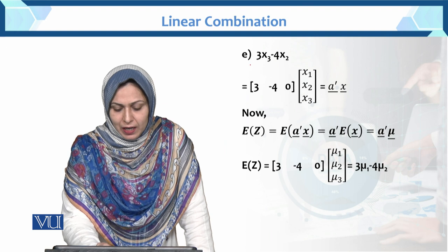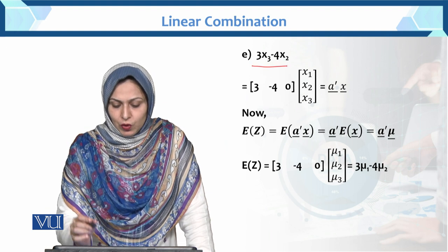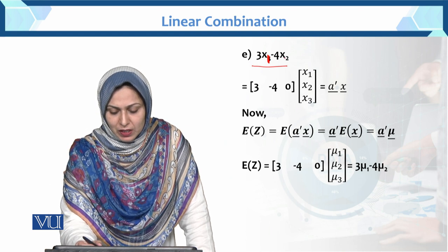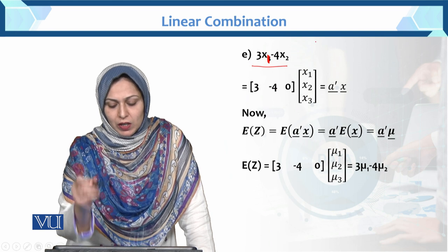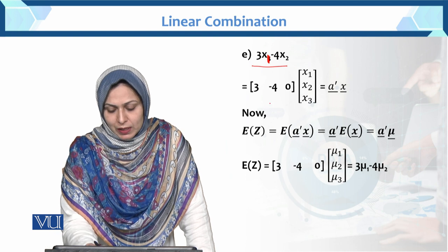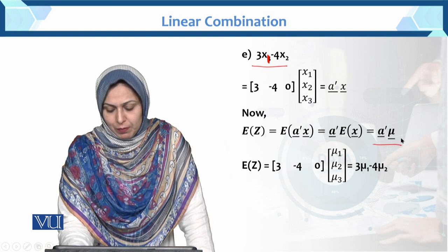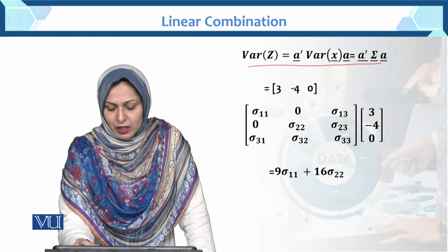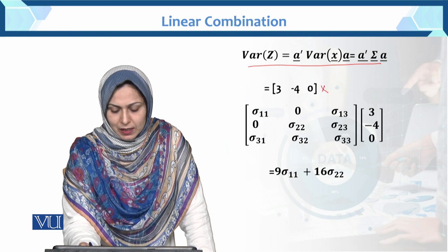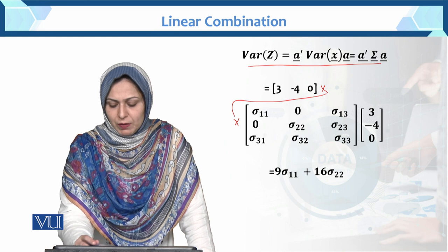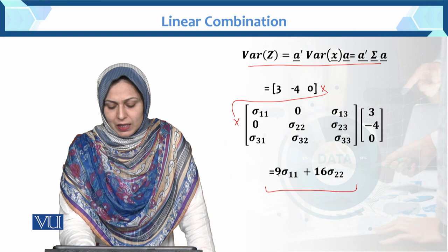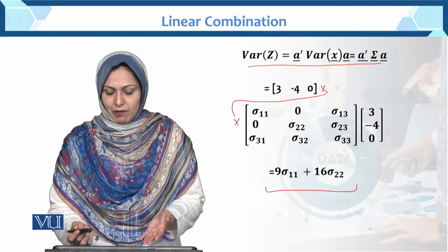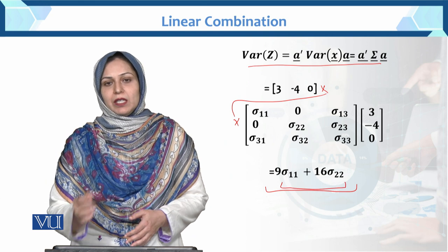The last part: z = 3x1 - 4x2. The constants are 3 for x1 and -4 for x2; x3 does not appear so its coefficient is 0. Following the same method, E[z] = a-transpose mu = -3*mu1 - 4*mu2. The variance: after solving a-transpose sigma a, the final result is Var[z] = 9*sigma11 + 16*sigma22. You can verify this by calculating it yourself.